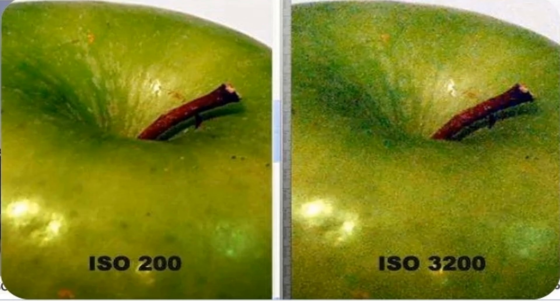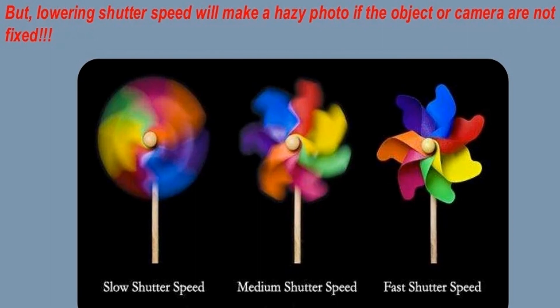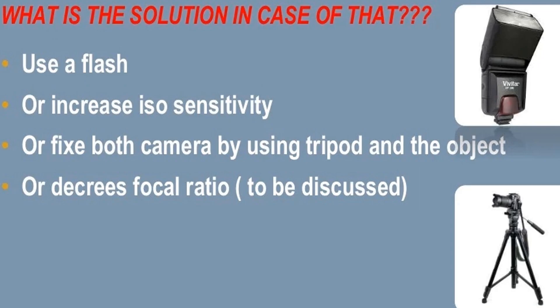Shutter speed is the length of time a camera shutter is open to expose light into the camera's sensor. Shutter speeds are typically measured in fractions of a second when they are under a second. Slow shutter speeds allow more light into the sensor and are used for low-light and night photography, while fast shutter speeds help to freeze motion. Examples of shutter speeds: 1/15th, 1/30th, 1/60th, 1/125th of a second. Lowering shutter speed will make a hazy photo if the object or camera are not fixed.